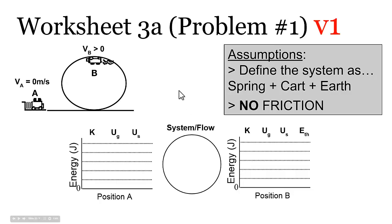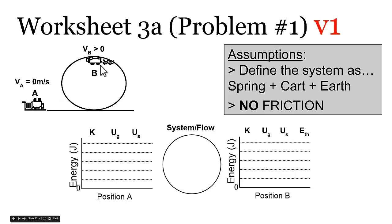In each of four examples, we look at the same situation: a roller coaster where a car with riders is against a compressed spring at position A, with a velocity of zero — it starts from rest. The compressed spring launches the car into a vertical loop. We look at the energy the system has at position A and finally at position B, up at the top of the loop, where its velocity is greater than zero and it's above a height of zero.